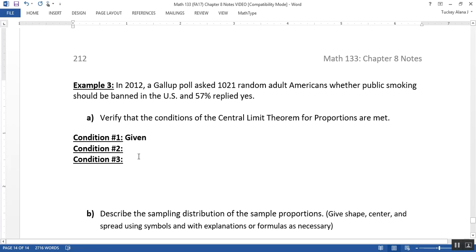In 2012, a Gallup poll asked 1,021 random adult Americans whether public smoking should be banned in the U.S., and 57% replied yes. So we're going to first start off by verifying that the conditions of the central limit theorem for sample proportions are met.